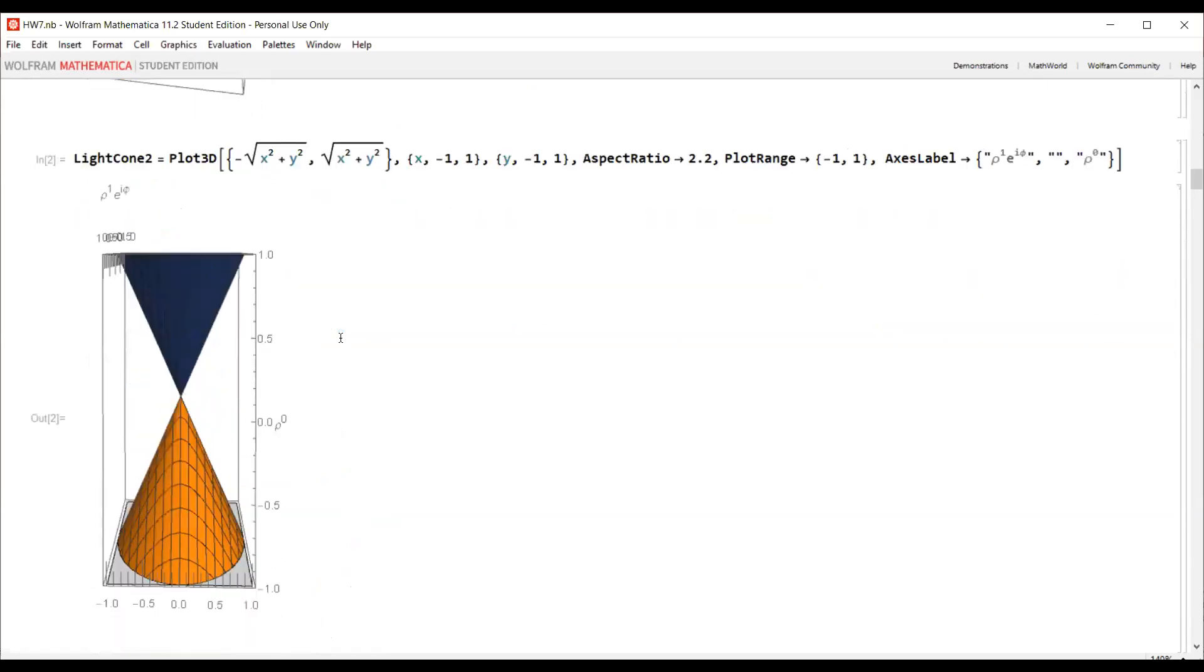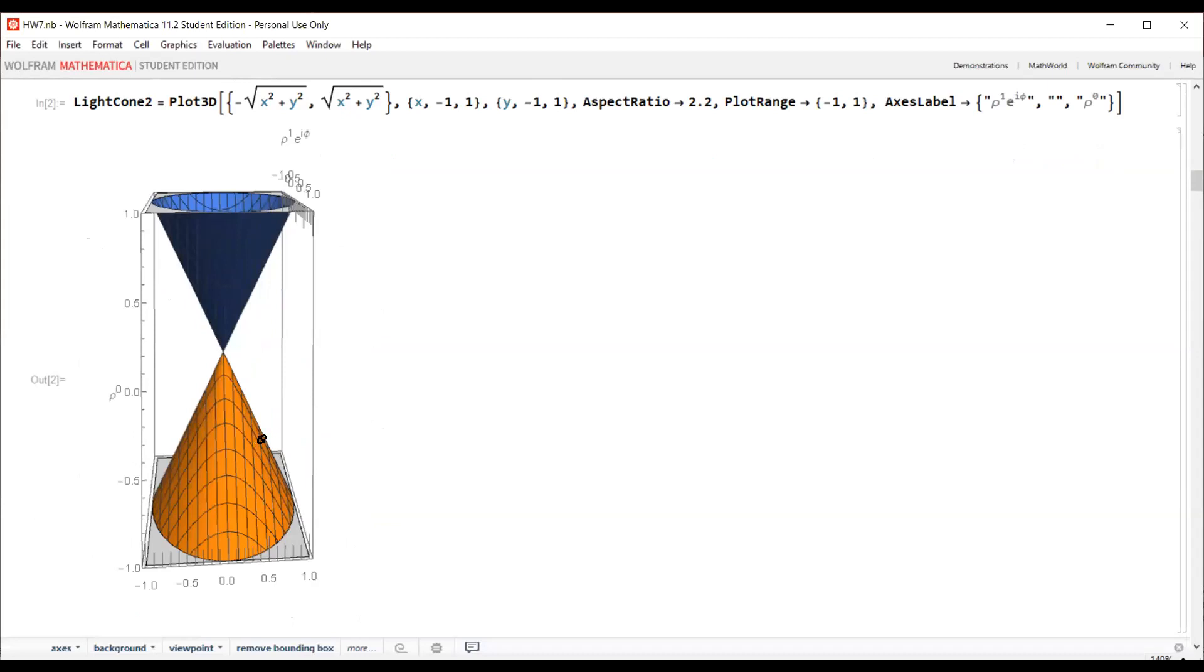Visualize it slightly differently, you can in the horizontal plane take rho one e to the power i phi, the normal polar coordinates in the horizontal plane. Again you take like cosine phi, sine phi, r cosine phi, rho one sine phi in the horizontal plane, the normal polar coordinates, and rho zero vertically, and again you get a cone. Very interesting, you also get a cone when you look at these coordinates.